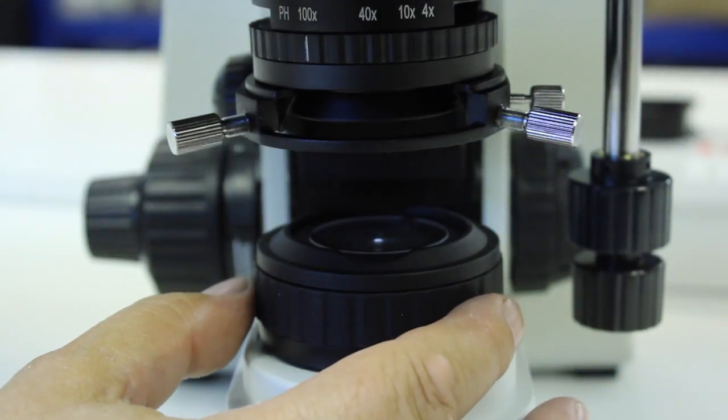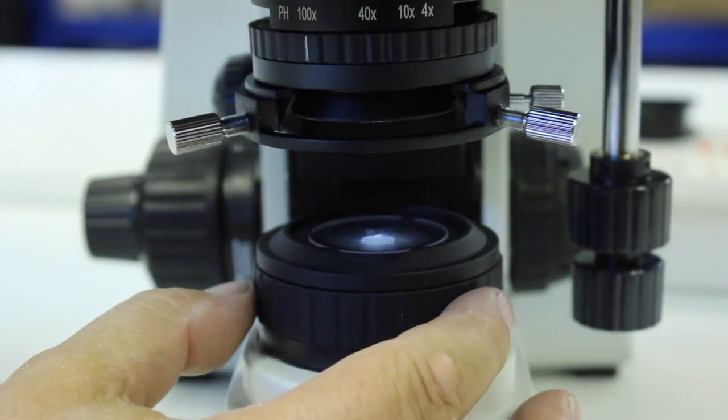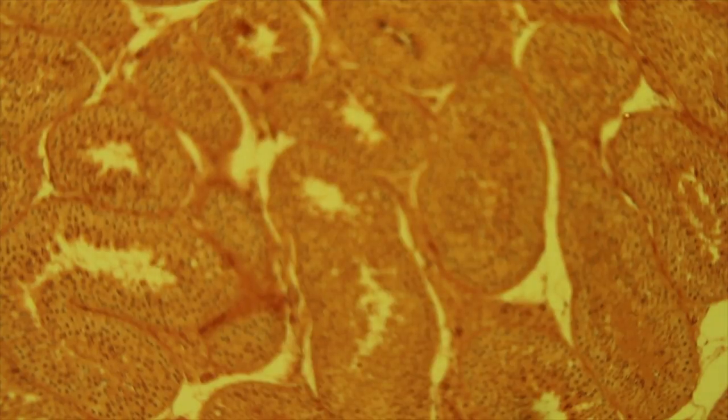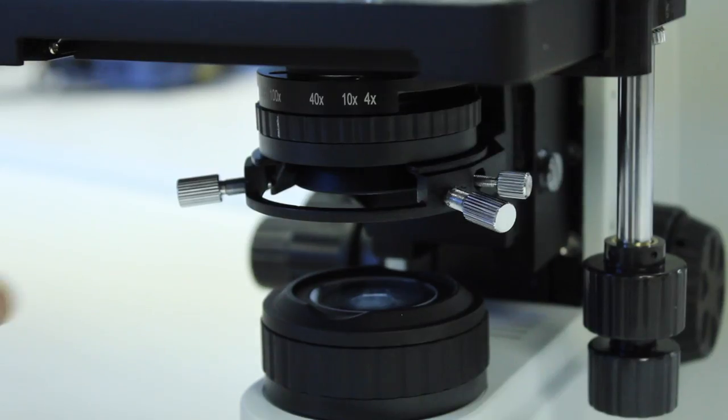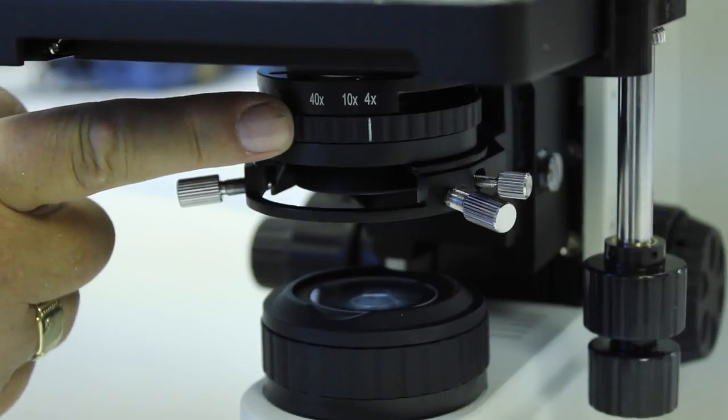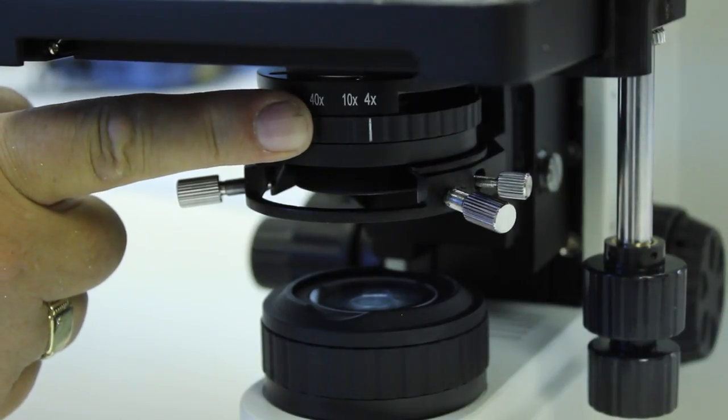You then open the field iris diaphragm until it just disappears outside of the field of view, and you'll be surprised how little you need to open the field iris to achieve that. The next step is to fully close the substage iris all the way over until it's just on the x4 mark.